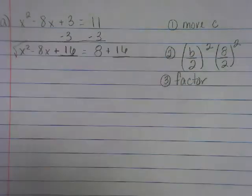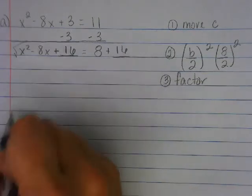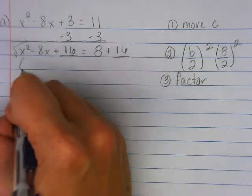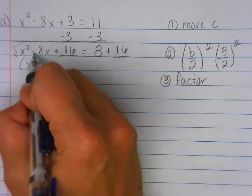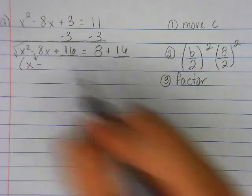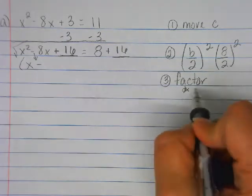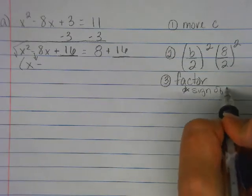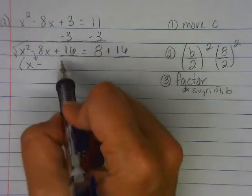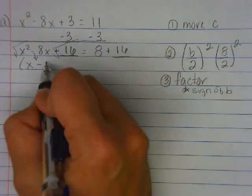So what's the square root of X squared? X sign of B, always the sign of B, right? If you want to make a note, sign of B. What is the square root of 16? Four, right?